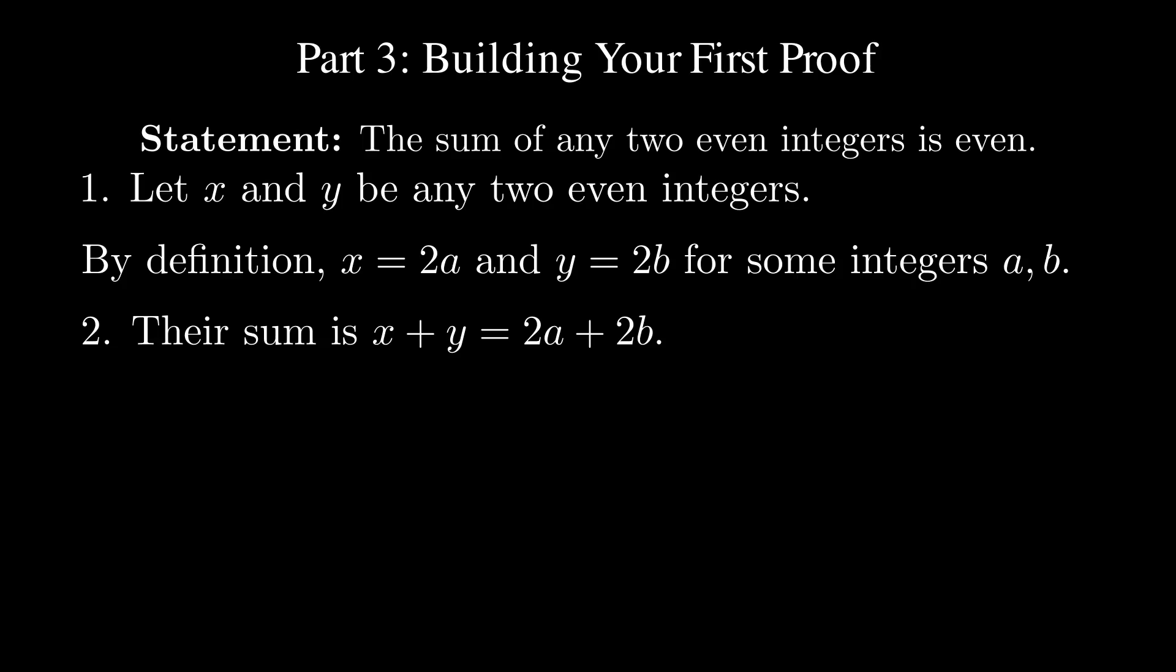So we need to write this quantity, 2a plus 2b, as twice an integer. Fortunately, we can factor out 2 from both terms. That's a common factor of 2. And wouldn't you know it?